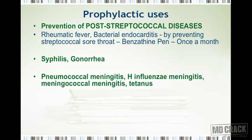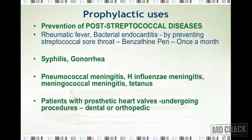Next conditions are syphilis and gonorrhea. You can also use penicillins for prophylaxis of pneumococcal meningitis, H. influenzae meningitis, and meningococcal meningitis. A very important condition is tetanus, which could be prevented with penicillins. Patients having prosthetic heart valves who are undergoing cardiac, dental, or orthopedic procedures can have infections prevented with penicillins. Finally, patients who suffer from agranulocytosis and are likely to catch infections easily can be given penicillins prophylactically.